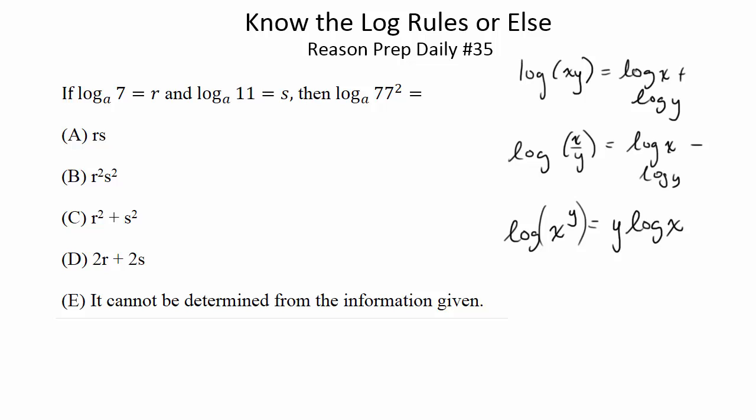So let's start with this, log base a of 77 squared. Well, the first rule we're going to use is this one. Instead of doing 77 squared, let's just take this, move it out front. So this becomes 2 times log base a of 77.